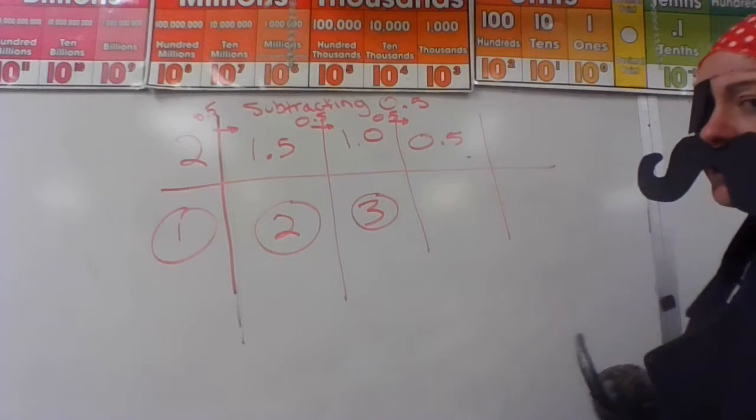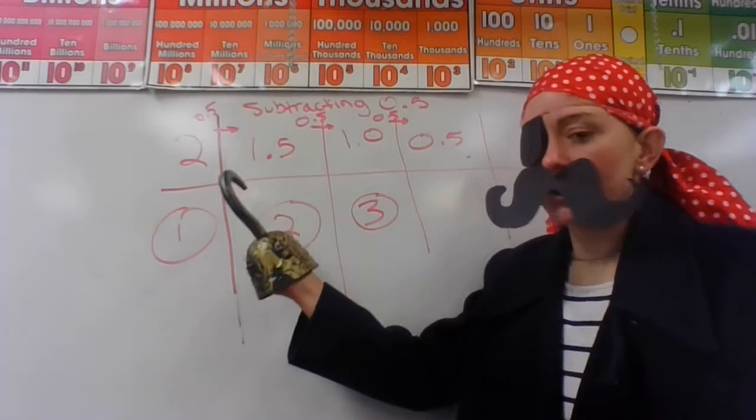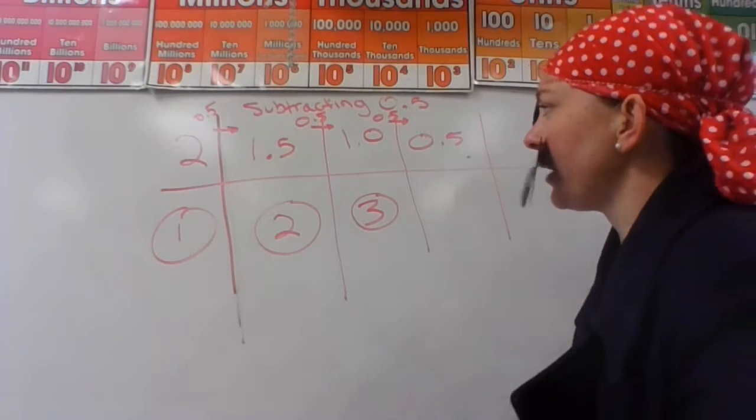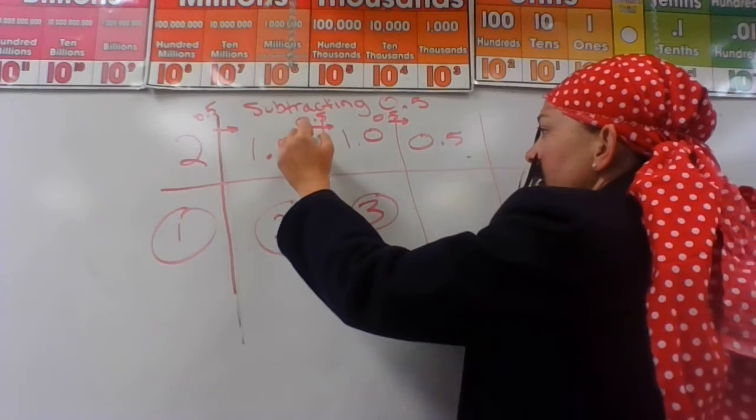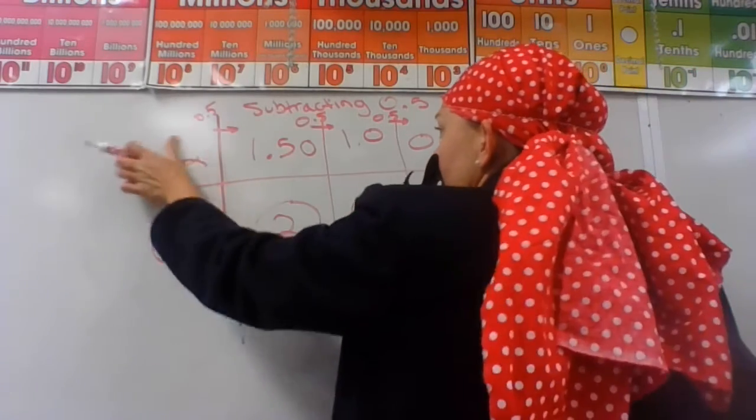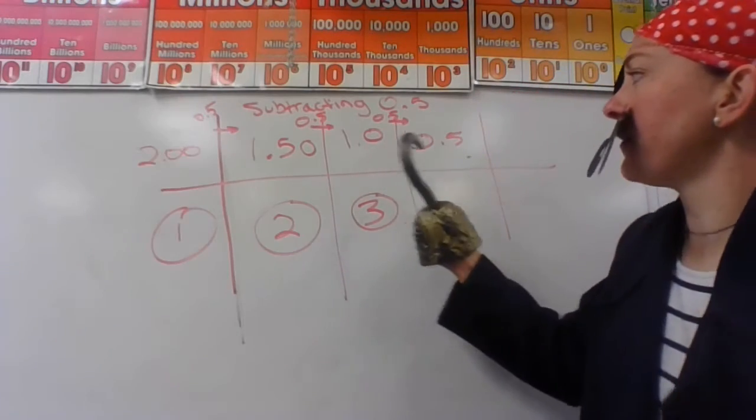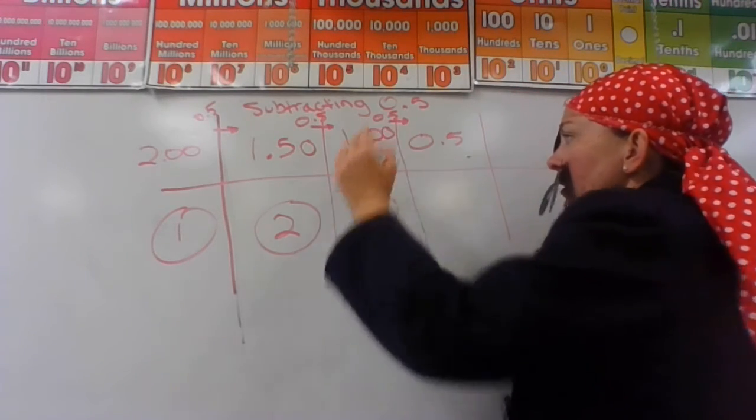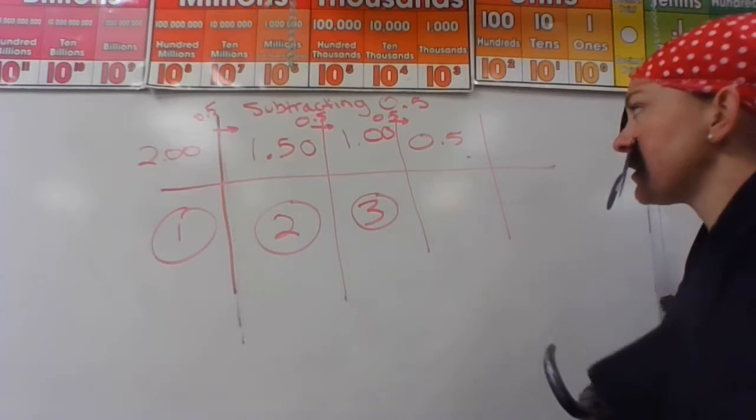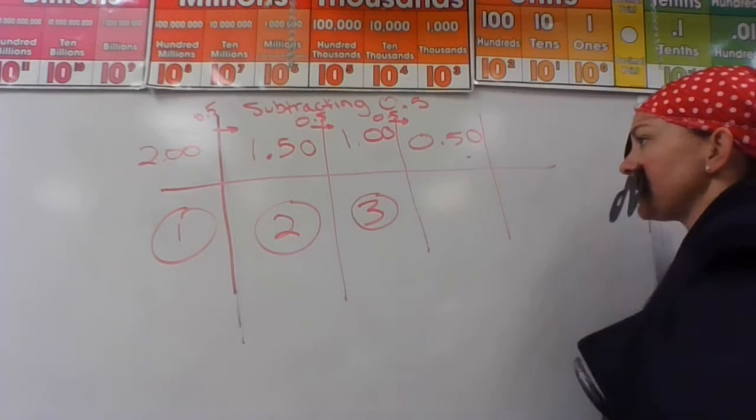If you think about it, it's like having two dollars to start with. And then I take away fifty cents, and I'm left with a dollar and fifty cents. And then I take away another fifty cents, and I'm left with a dollar. And I take away another fifty cents, and I'm left with fifty cents.